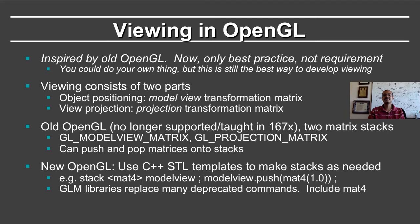Viewing consists of two main parts. First, you need to position the objects correctly in the scene. This has two components: the model transformation, where you have the object in certain canonical coordinates and you want to translate, rotate, and scale it to position it correctly in the world; and the view transformation, which depends on where the camera is located and its orientation so that it can view the objects in the scene. Taken together, these are known as the model view transformation matrix. The second aspect is the projection operation or projection transformation matrix, where you take this 3D world and project it based on the camera onto a 2D image.